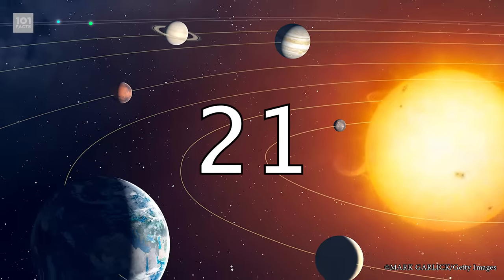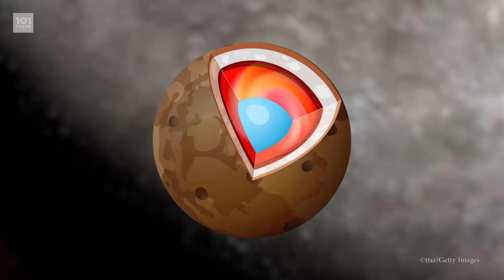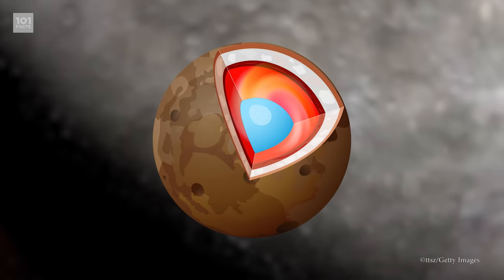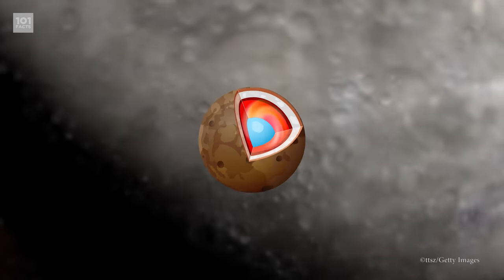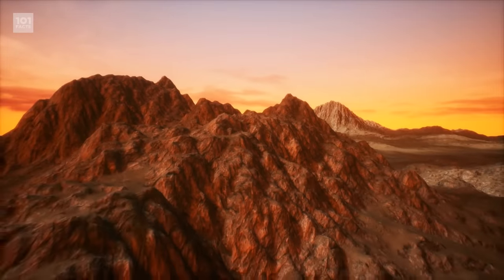Despite Mercury being the smallest planet in our solar system, it's actually getting even smaller. This is because the planet's iron core cools, which causes it to shrink, and because Mercury has a single continental plate that covers the entire planet, the shrinkage causes huge cliffs and valleys.